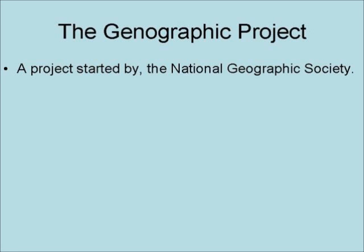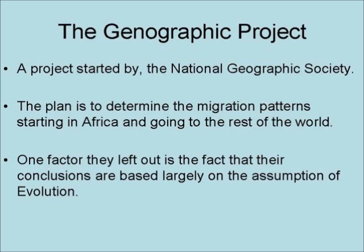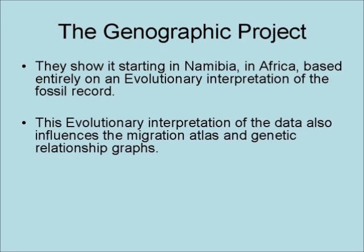The Genographic Project is a project started by the National Geographic Society. The plan is to determine the migration patterns starting in Africa and going to the rest of the world. One factor they left out is the fact that their conclusions are based largely on the assumption of evolution. They show it starting in Namibia in Africa, based entirely on an evolutionary interpretation of the fossil record. This evolutionary interpretation of the data also influences the migration atlas and the genetic relationship graph.